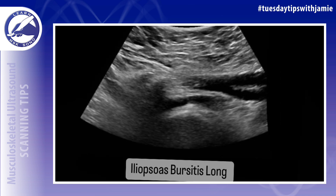The bursa is a flattened sac of fibrous connective tissue lined with synovial membrane. It is typically collapsed unless bursitis is present, like in the examples I've shown.